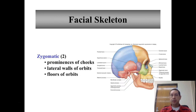Then we come to the cheek bones, the zygomatic bones, which are the green ones on our model, on our picture here. They form the prominences of your cheek, the lateral walls of the orbits, the floor of the orbit, and they have the temporal process, which connects with the zygomatic process from the temporal bone to form the zygomatic arch.